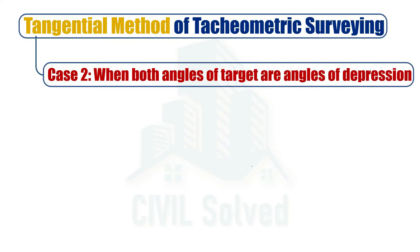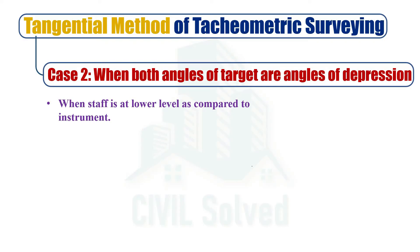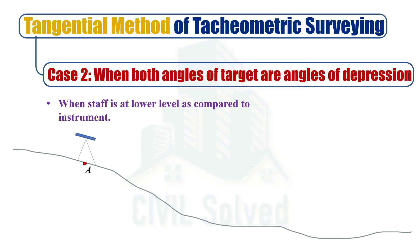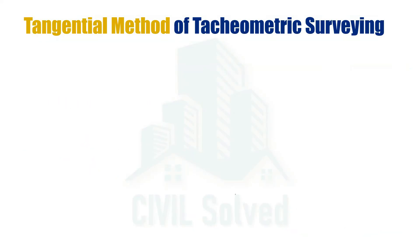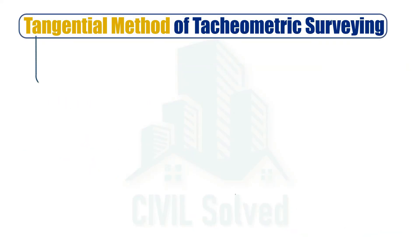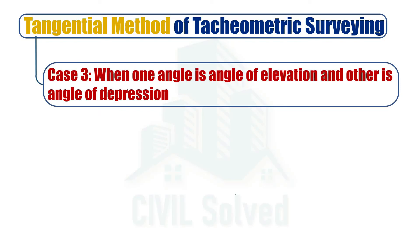Similarly, we have case number two in which both angles of target are angles of depression. This is the case when the staff is at a lower level compared to the instrument, or the instrument is at a higher level than the staff. In this type of cross section, the instrument is placed at a higher level than the staff, the angles are measured, and in this case both angles would be angles of depression.